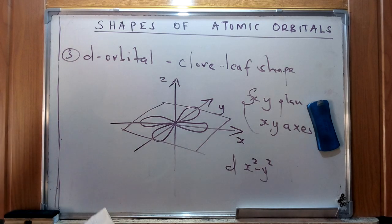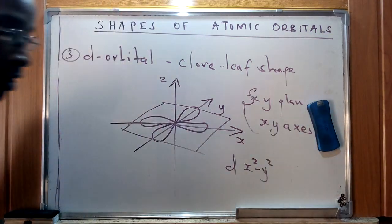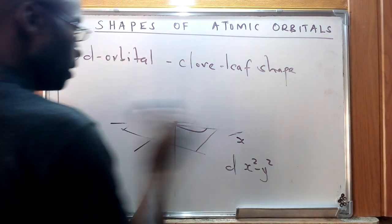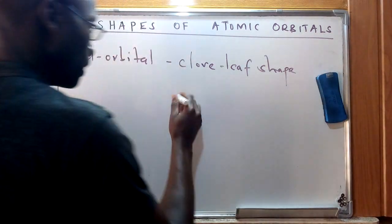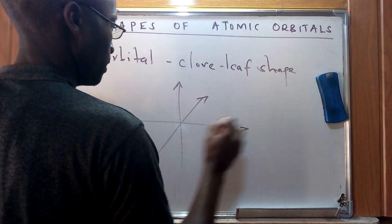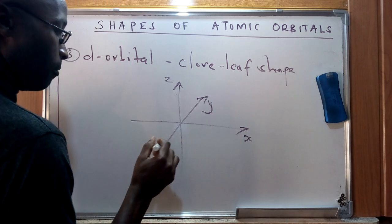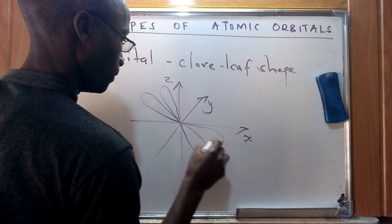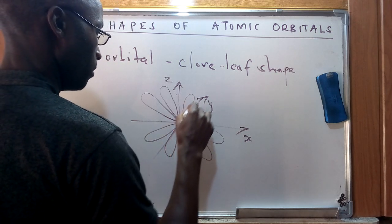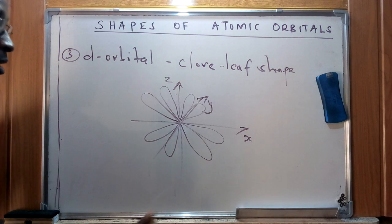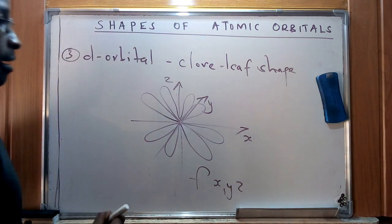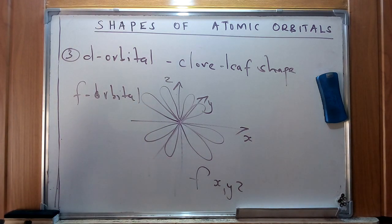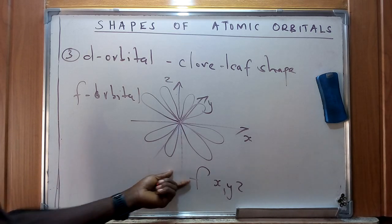The f orbital has a different shape from the d orbital. For the f orbital, the electron clouds protrude toward the spaces between the axes — x, y, and z — rather than along them. The f orbital has two particular shapes protruding into the spaces in between the axes. One example is the f-xyz orbital, though a clear three-dimensional illustration is difficult to represent here.